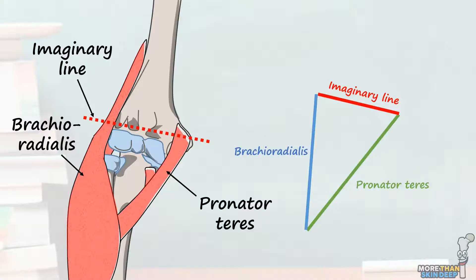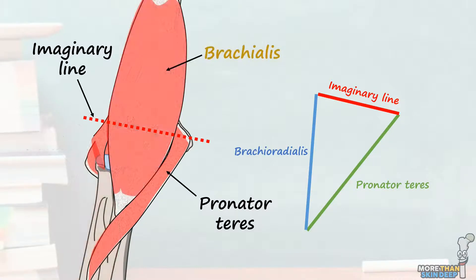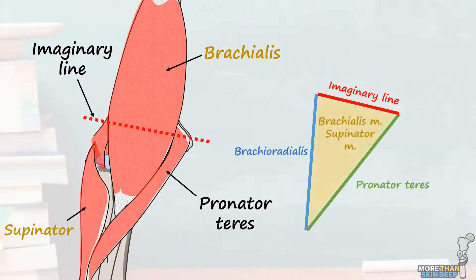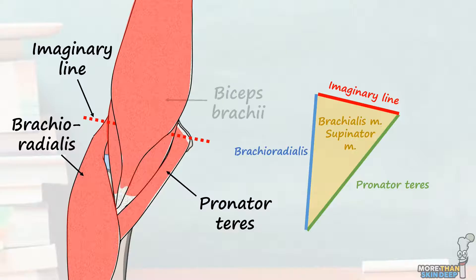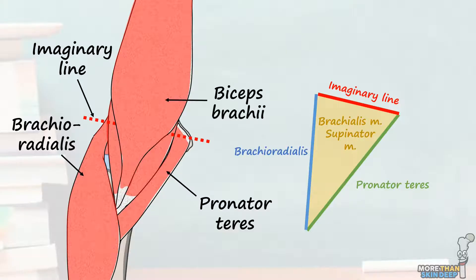In the floor of the cubital fossa are two large muscles. The first is the wide-bellied brachialis muscle, and the second is the smaller supinator muscle, which mostly sits underneath the brachioradialis. The biceps brachii muscle tendon passes through the cubital fossa, and where it does it produces the bicipital aponeurosis, which forms part of the roof of the cubital fossa. The rest of the roof is composed of fascia, fat, and skin.